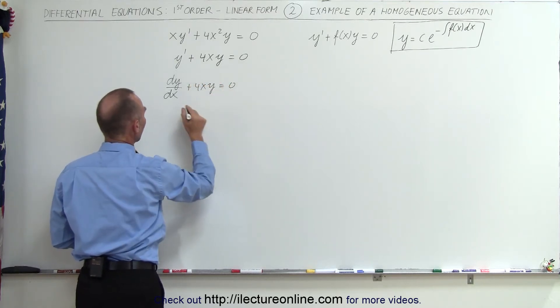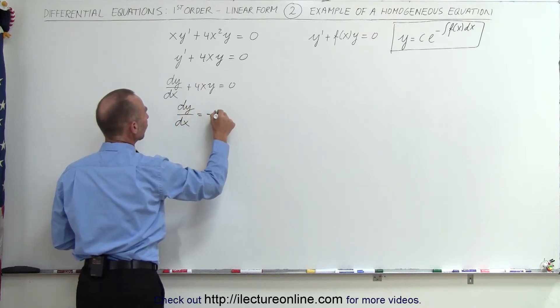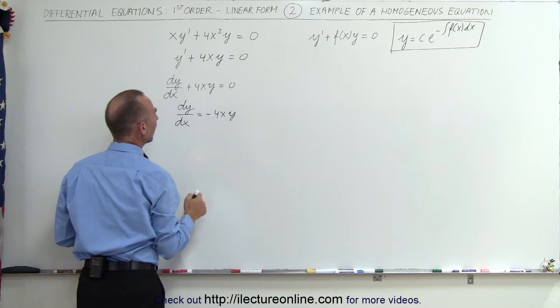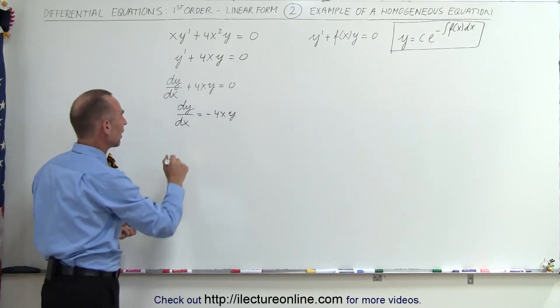Moving this to the other side, we get dy/dx equals minus 4x times y. Then separating the variables, bringing all the y's to the left side and all the x's to the right side, we have dy divided by y equals minus 4x dx.